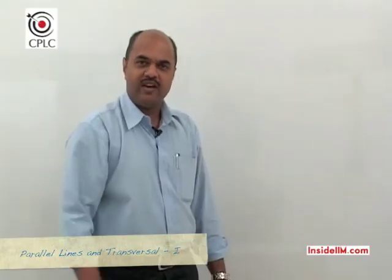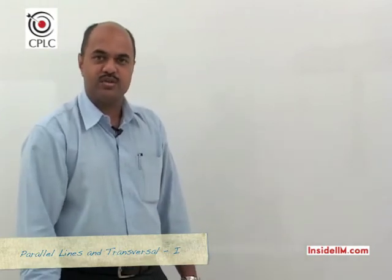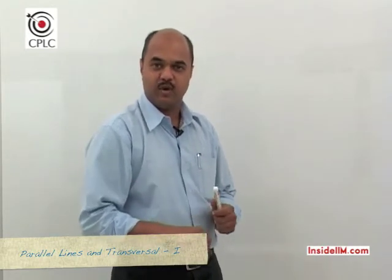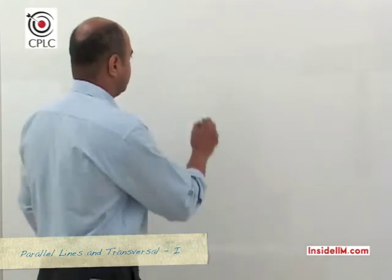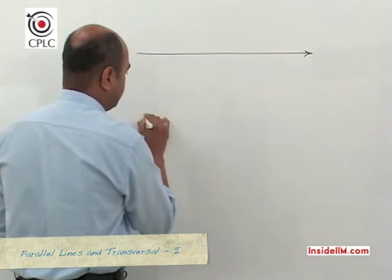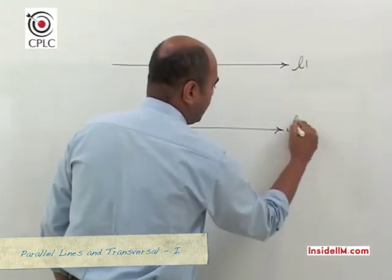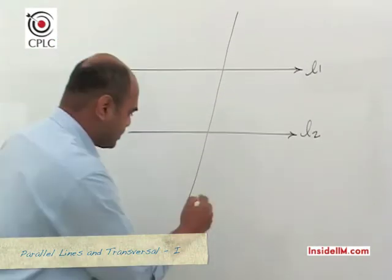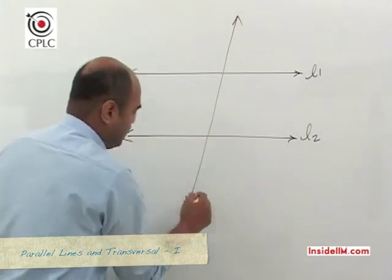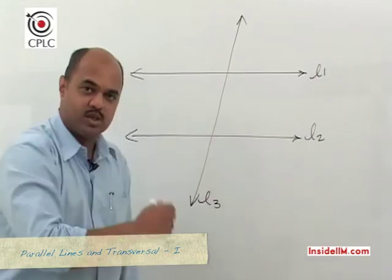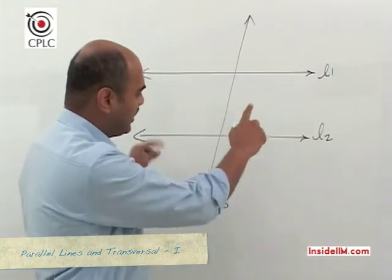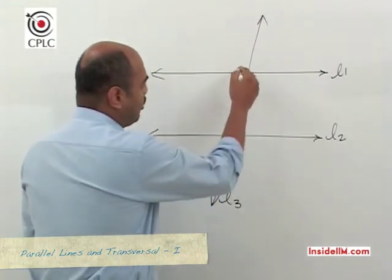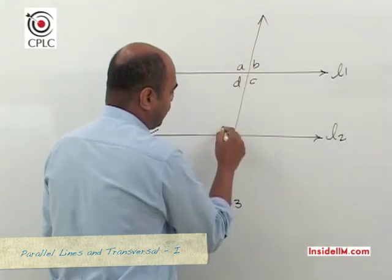A very important concept that will regularly be used to solve problems is based on parallel lines and the angles that get formed, and what are the properties of these angles. Suppose we look at two parallel lines — let's call them L1 and L2 — and if we have a line which cuts these two parallel lines, let's call it L3. This line which cuts two parallel lines is also called a transversal.